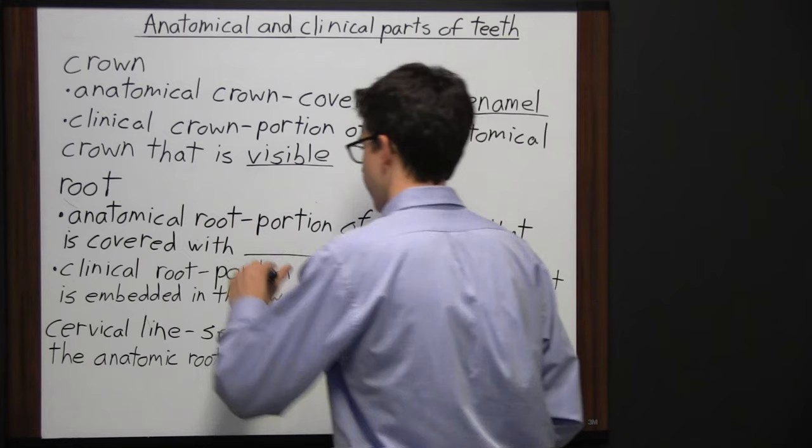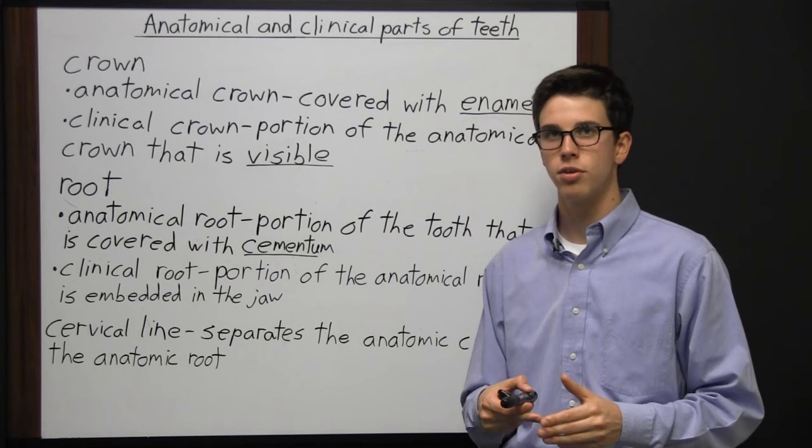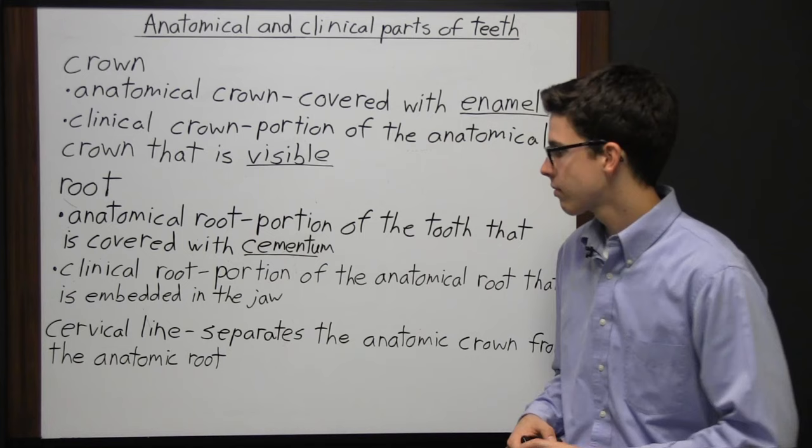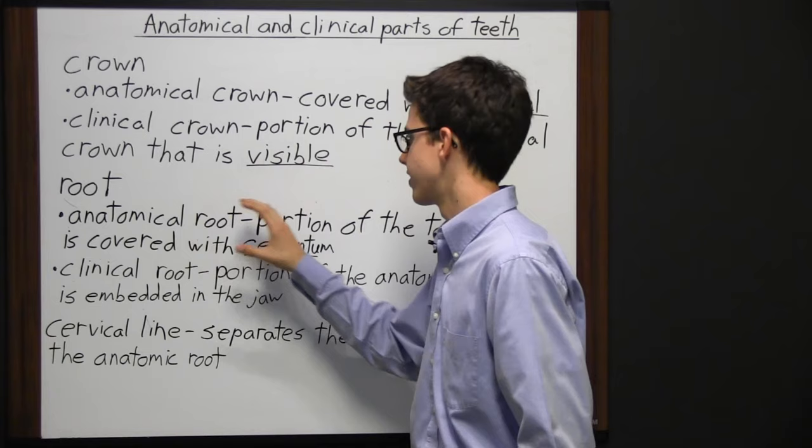The anatomical root is the portion of the tooth covered with cementum. Cementum is a bone-like substance that facilitates anchorage of the tooth in its bony socket, called the alveoli. The clinical root is the portion of the anatomical root that is embedded in the jaw.